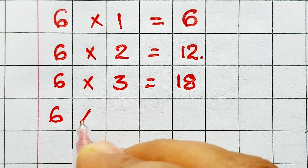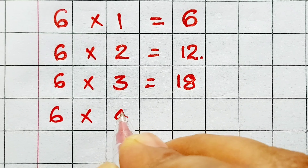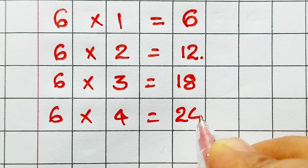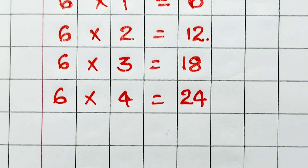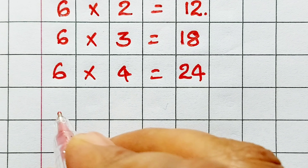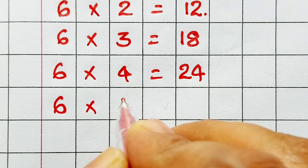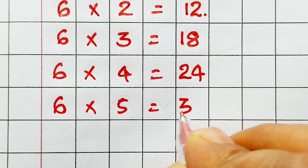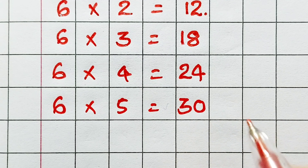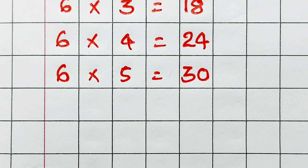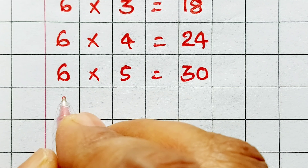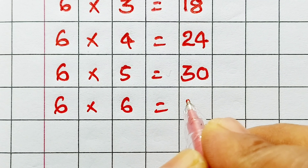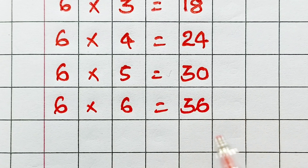Six four's are twenty-four. Six five's are thirty. Six six's are thirty-six.